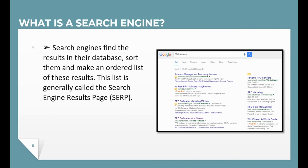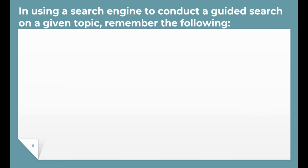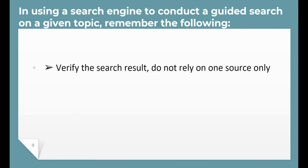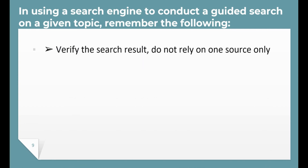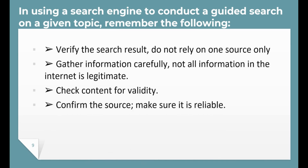This list is generally called the Search Engine Results Page, or SERP. There are many search engines such as Google, Chrome, Firefox, Safari, Bing, Yahoo, and others. In using a search engine to conduct a guided search on a given topic, remember the following: verify the search result; don't rely on one source only; gather information carefully — not all information on the internet is legitimate; check content for validity; and confirm the source — make sure it's reliable.